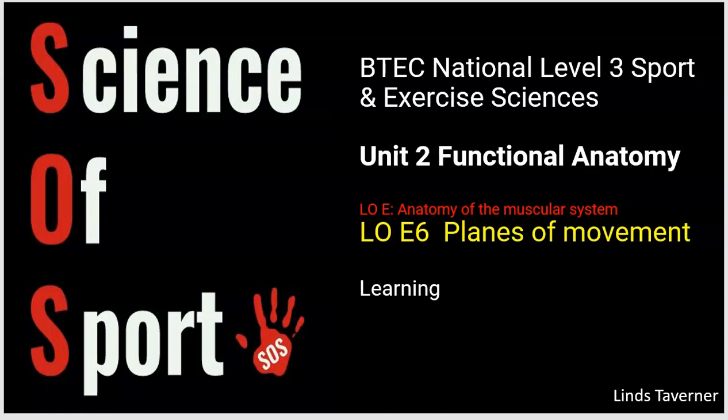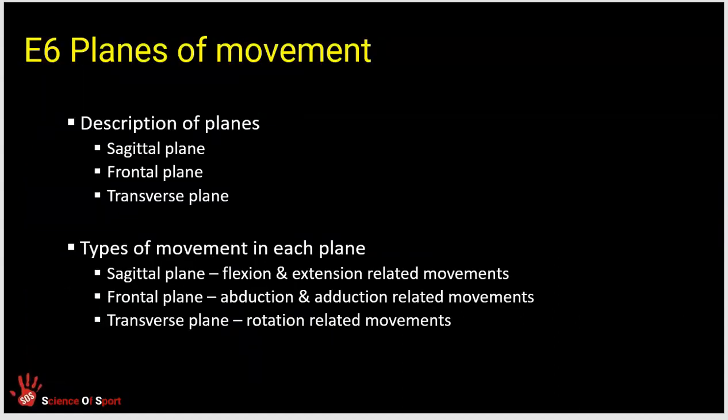Hello guys. This Science of Sport video will look specifically at planes of movement. It comes within Unit 2, functional anatomy, and is specifically related to the anatomy of the muscular system. The specification asks us to look at three planes of movement: the sagittal, frontal, and transverse planes. You will need to be able to look at images or think about sporting actions and describe what planes of movement the skills or movements occur in.